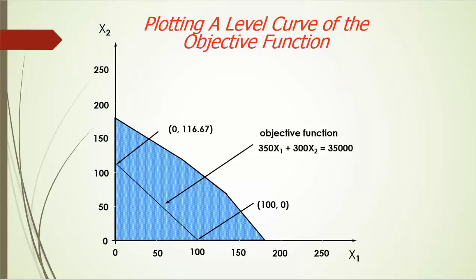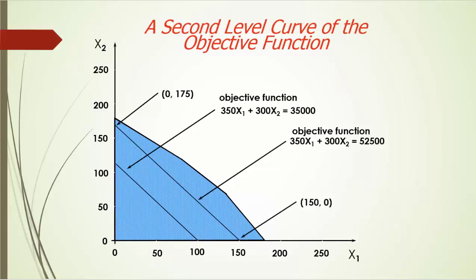Every point or product mix on this line will generate a profit of exactly $35,000. Is it possible to make such a profit? The answer is obviously yes. We can pick any point between (0, 116.67) and (100, 0); it will give us a profit of $35,000. And any of these points is also feasible. It seems like a profit target of $35,000 is easy to achieve.